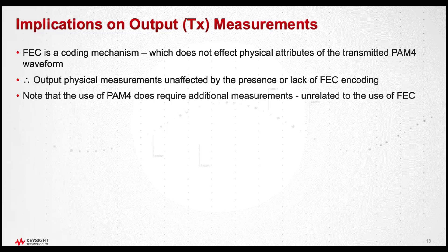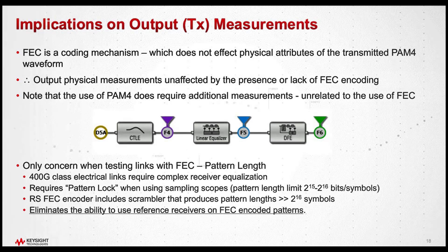But there is one important caveat that we do need to keep in mind regarding these transmitter measurements, and it has to do with the reference receiver. As we saw in the earlier slides, with the tight link margins that we have right now, we're putting very complex equalizers in the receivers, and these need to be implemented in the reference receiver used as signal conditioning in the measurement instrument — in this case, the sampling oscilloscope — to make all of these TX measurements.